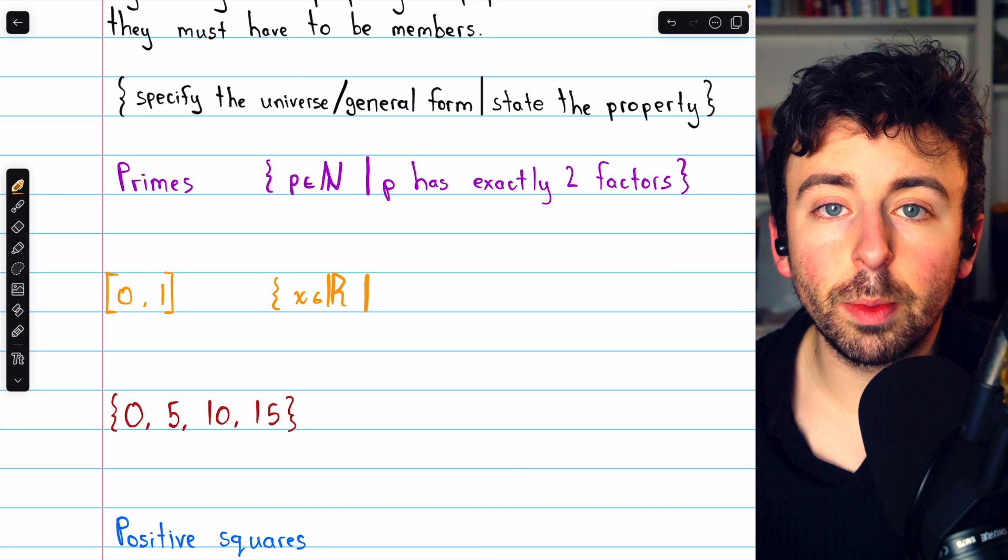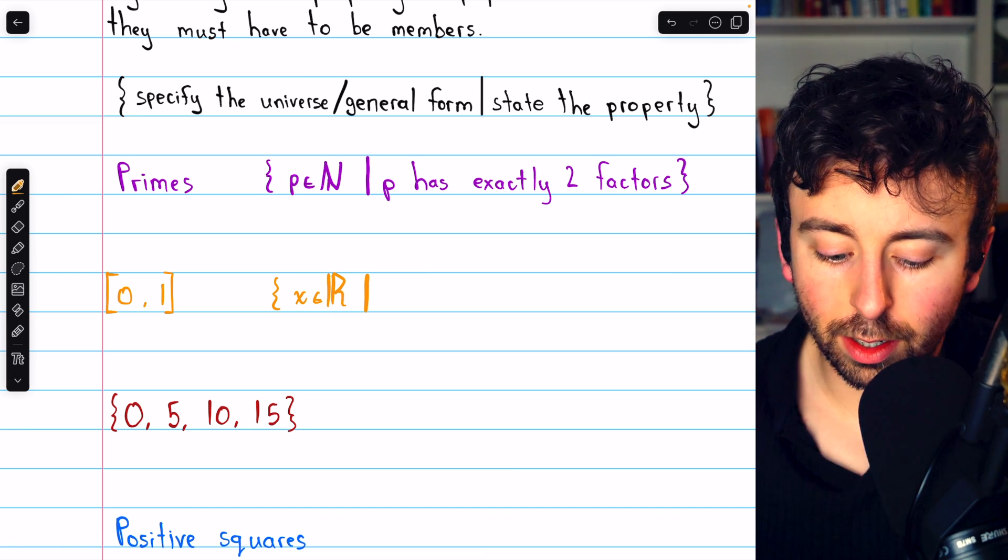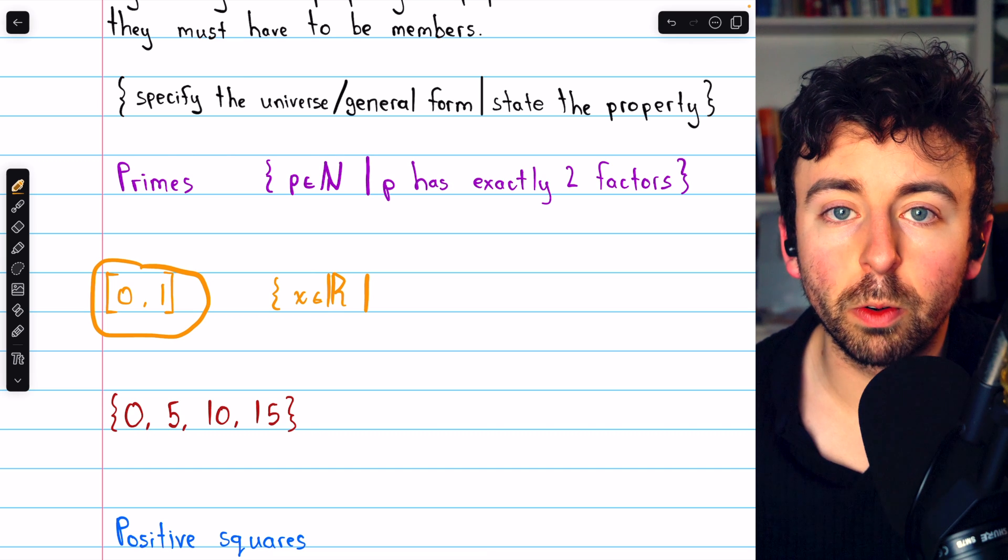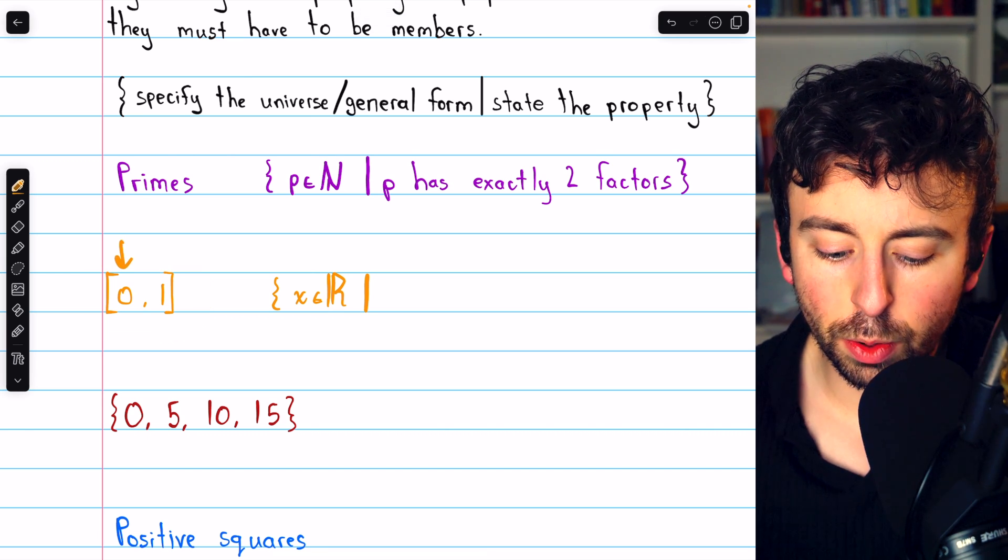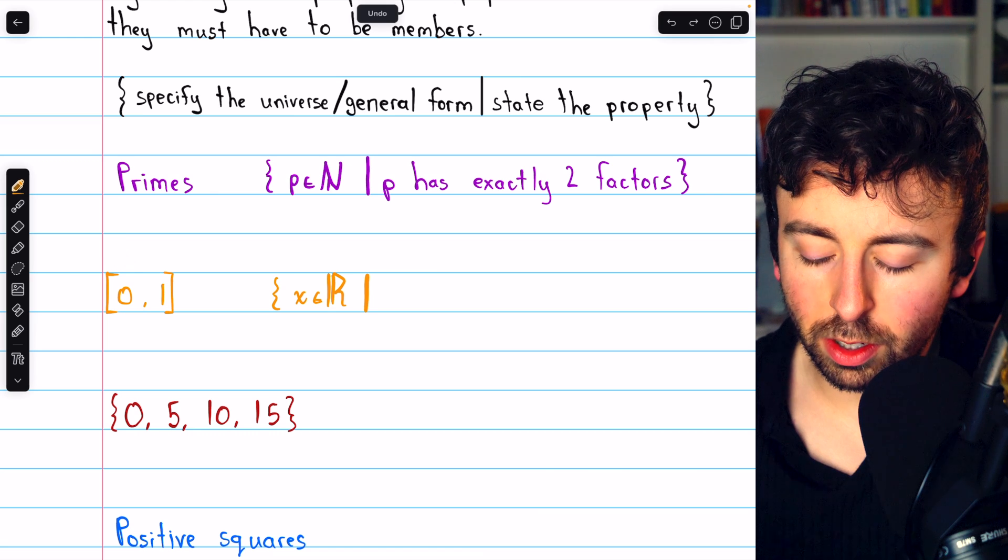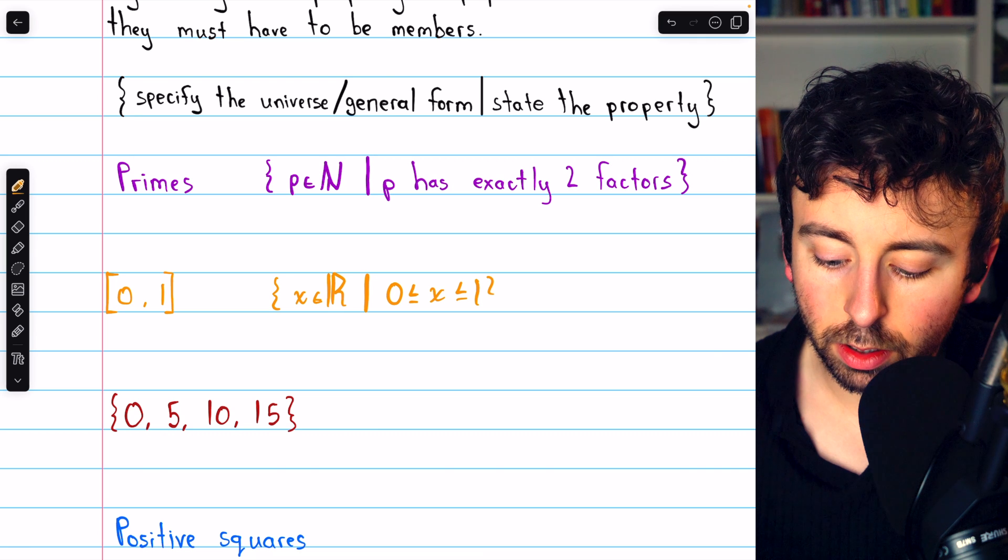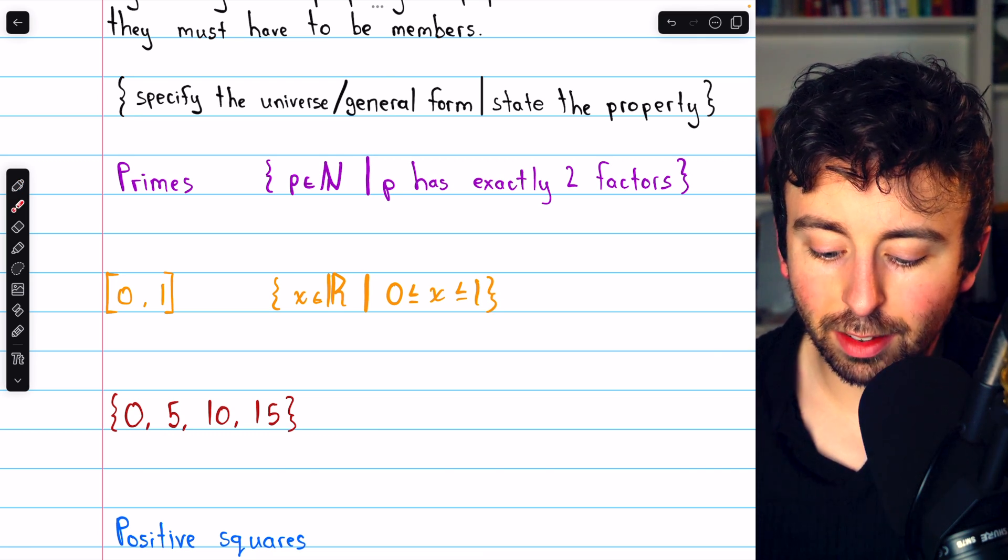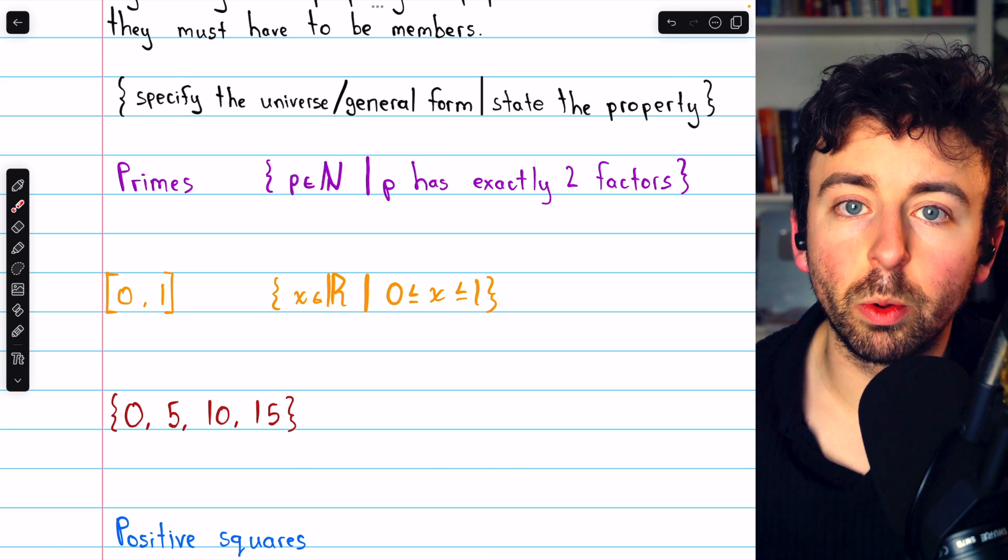And specify what else has to be true about x for it to be in this set. Well, we're trying to describe the closed interval from 0 to 1, so that's all numbers between 0 and 1, including the endpoints. So I would just say that x has to be greater than or equal to 0 and less than or equal to 1. So this set contains all real numbers that are between 0 and 1, including 0 and 1, which is precisely this closed interval.